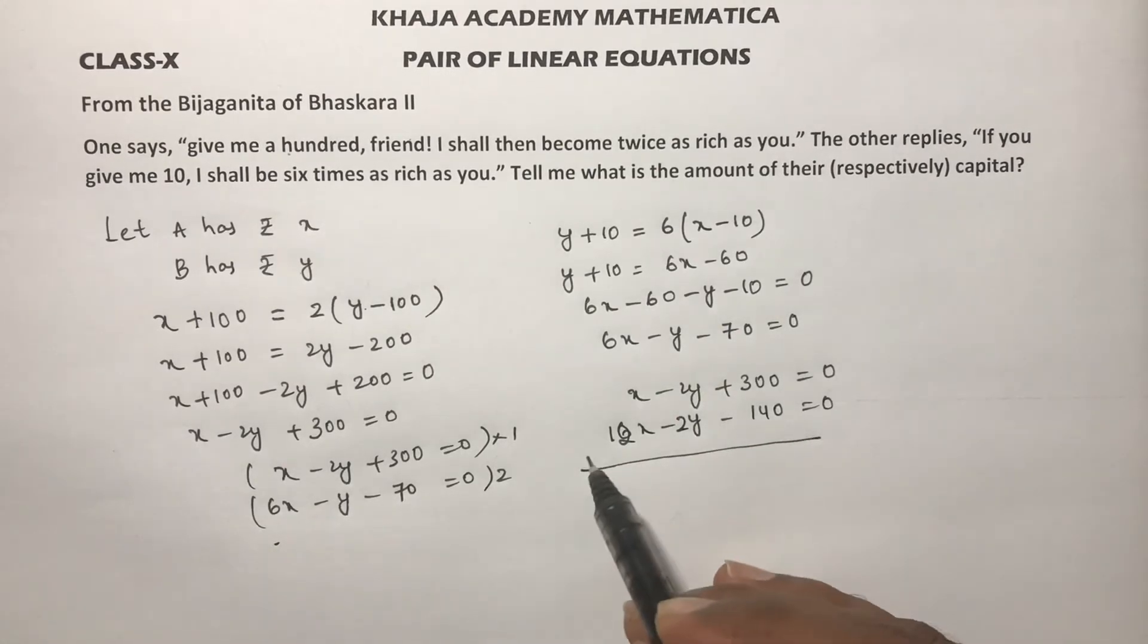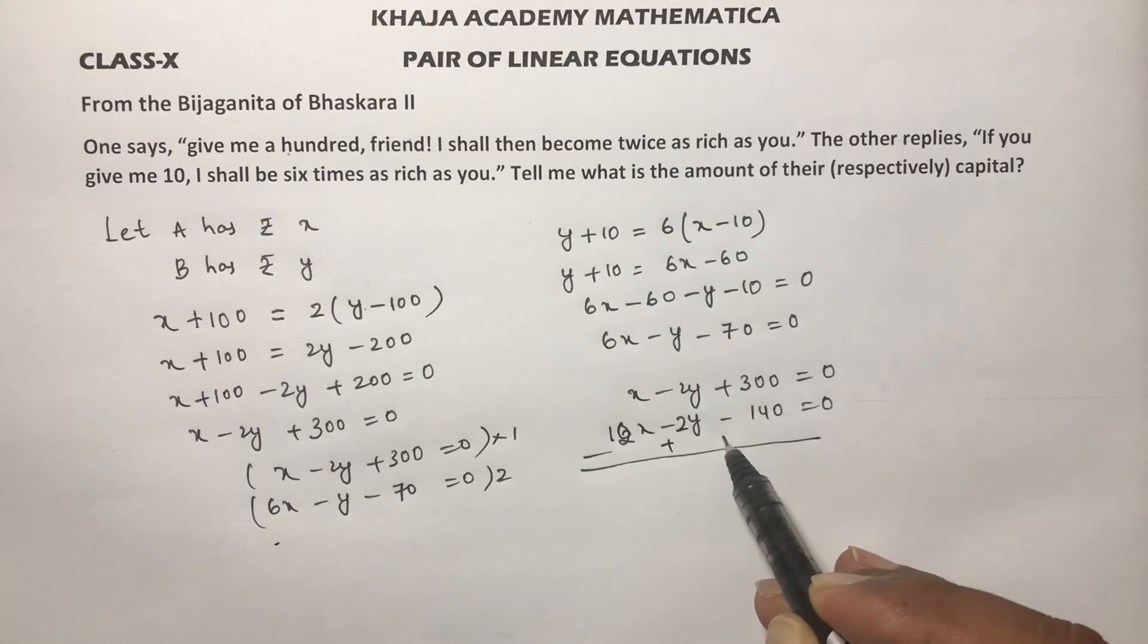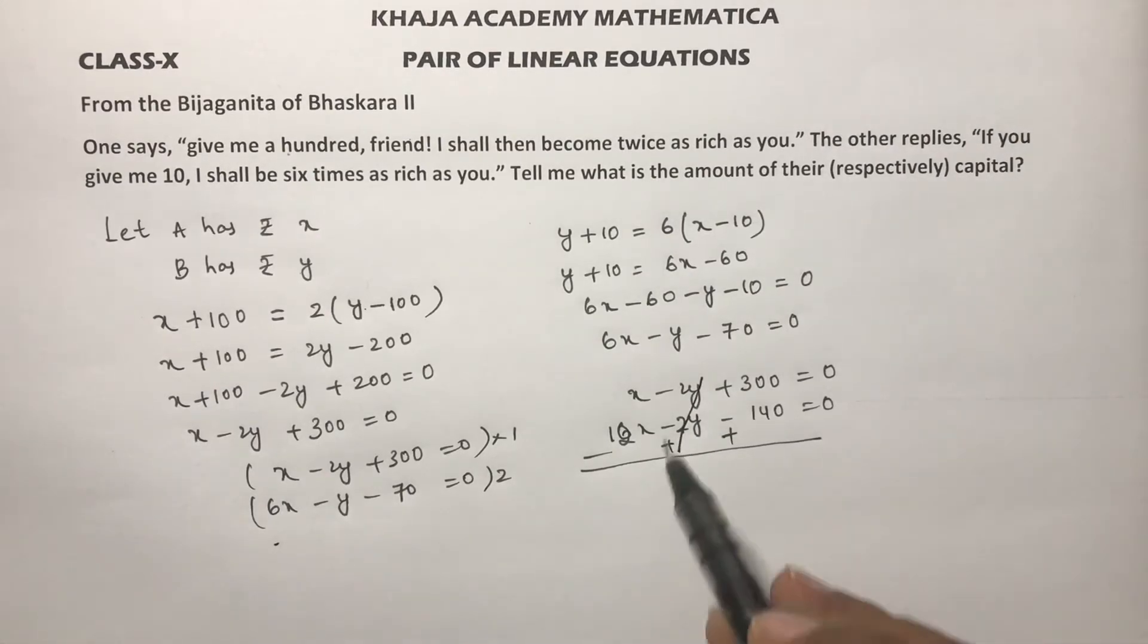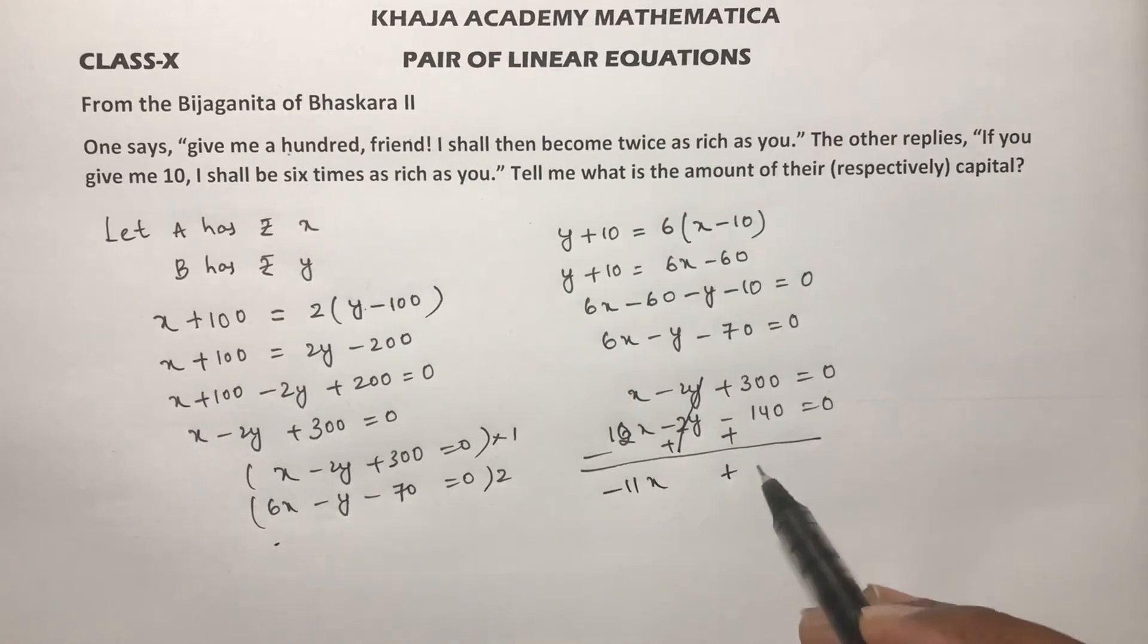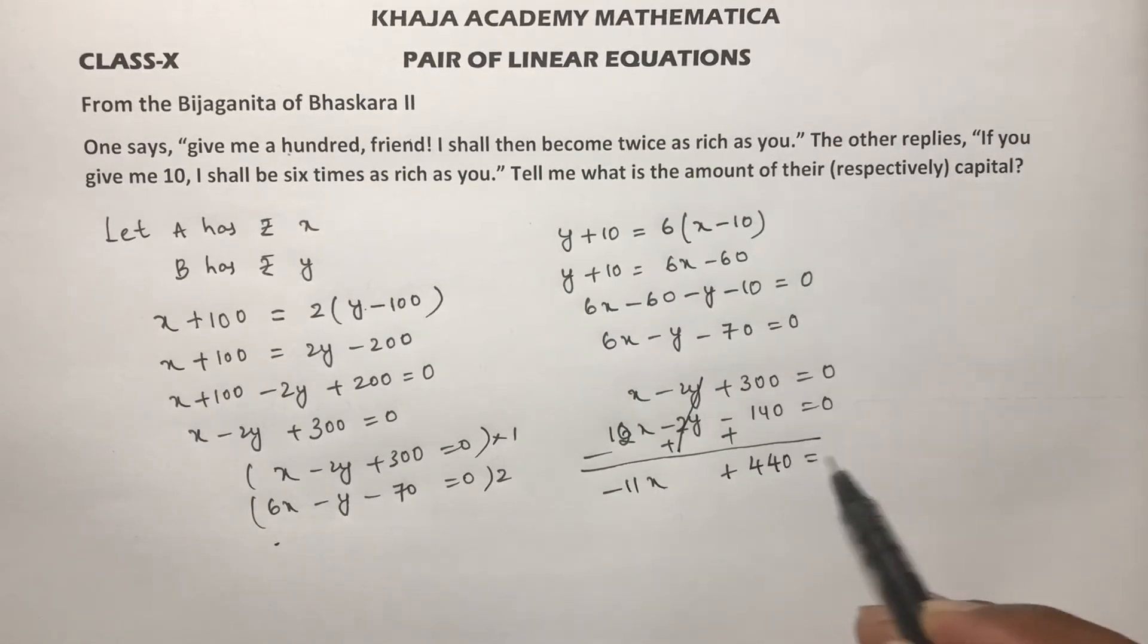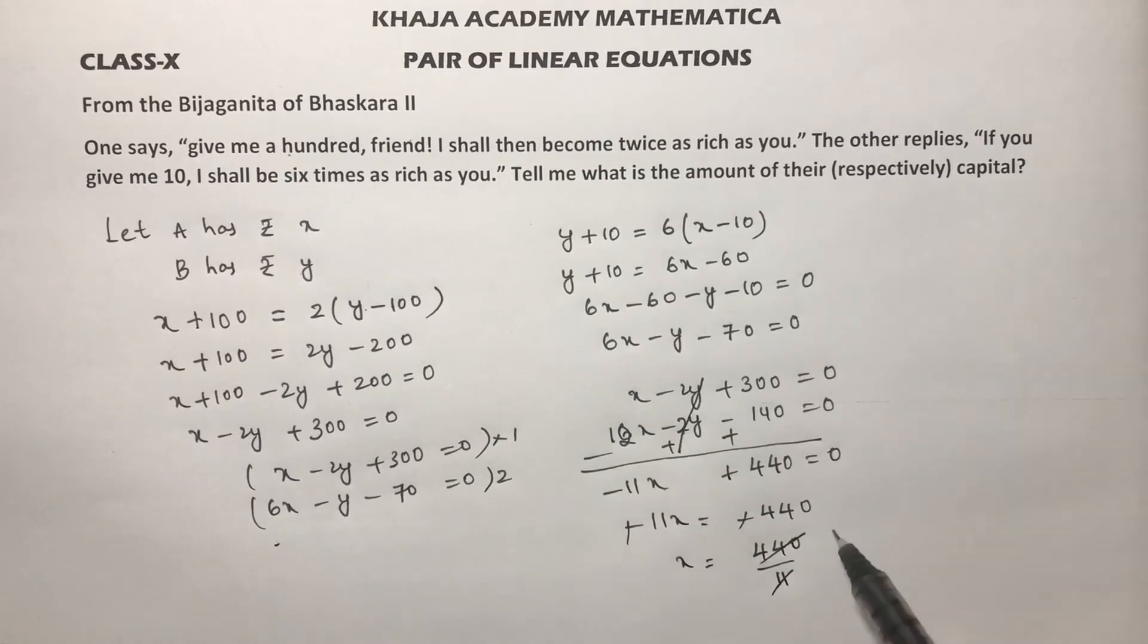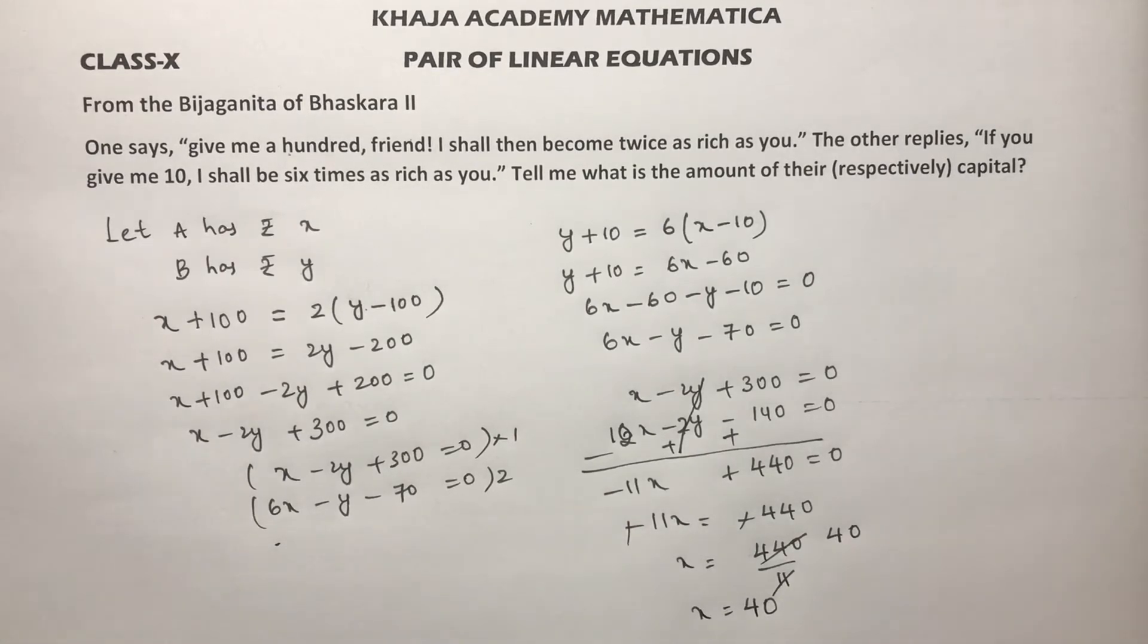Now if I'll subtract, this will become plus, minus 2y plus 2y will get cancelled. Minus 11x plus 440 equals 0, so minus 11x equals minus 440, minus minus cancel, x equals 440 by 11, so the value of x is 40. So A has 40 rupees.